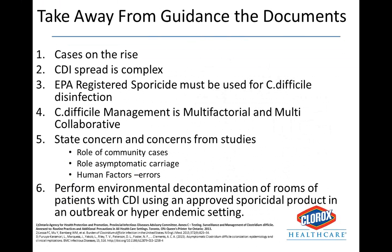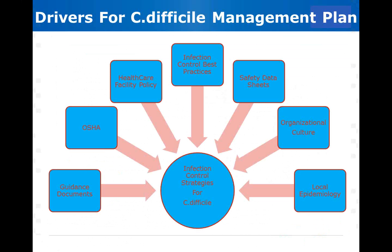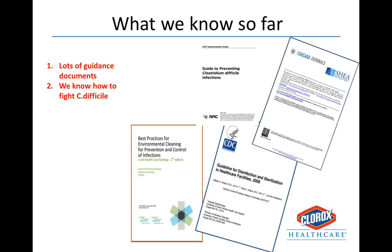This is what the guidance documents are speaking to at the present moment. But I want to dive deeper and speak to some of the challenges related to the recommendations and how there might be an opportunity to go above and beyond. An infection control strategy is typically fed by guidance documents, Occupational Health and Safety Act guidance, and a plethora of other inputs. With all these moving pieces, one thing that's really clear is that we seem to know the strategy of how to fight C. difficile.